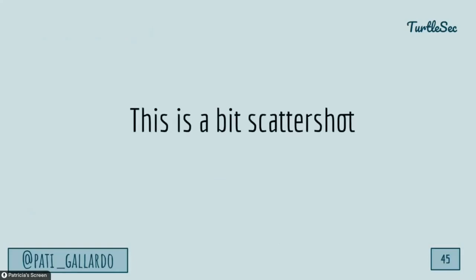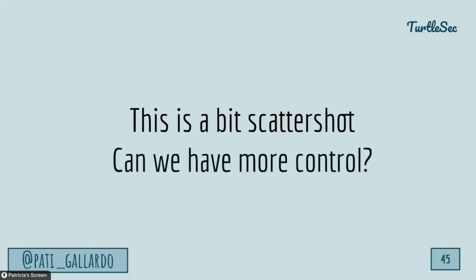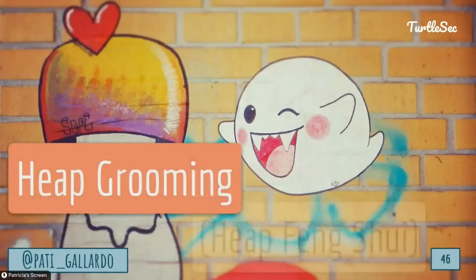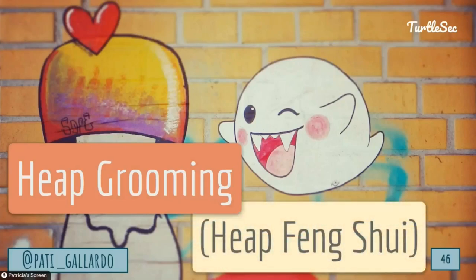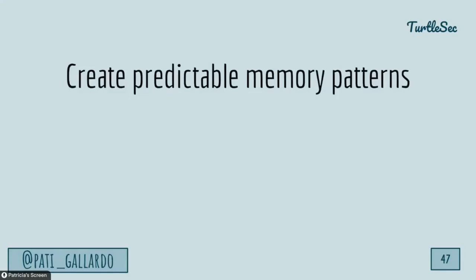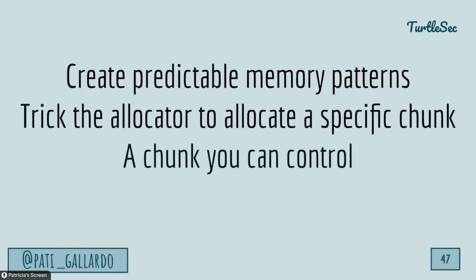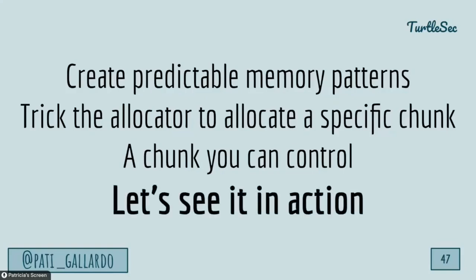So heap spraying is a very scattershot approach — blasting copies of our exploit string all over the heap. Maybe we can do this with more fine-grained control. That brings us to heap grooming, also called heap feng shui. The idea is to try to create predictable patterns on the heap, then trick the allocator into allocating a specific chunk to us as an attacker — a chunk that we can control, maybe adjacent to another chunk we can control, so we have predictable behavior. This is often used for heap buffer overflows.